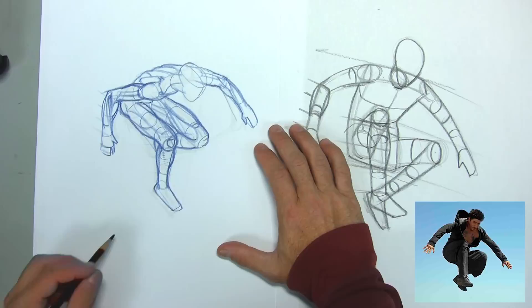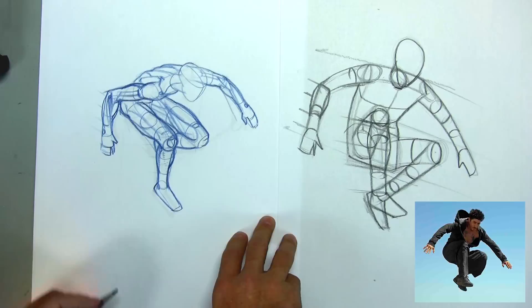And darkening those lines in, I can now darken in the contours of all the muscles more confidently knowing that everything should be in position where it needs to go.